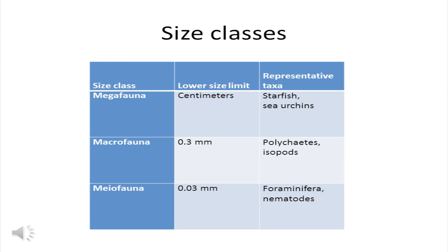Deep sea biologists divide the fauna by size class. The largest organisms are the megafauna; their lower size limit is measured in centimeters, and includes things like starfish and sea urchins. The macrofauna is the intermediate size class, and its lower size limit is 0.3 mm, including things like polychaetes and isopods. The meiofauna are the smallest animals; their lower size limit is 0.03 mm, and they include things like foraminifera and nematodes.